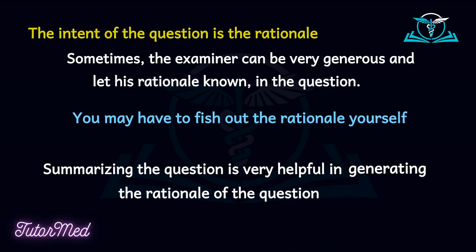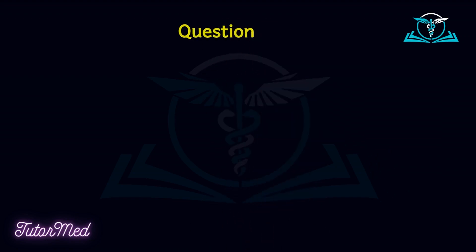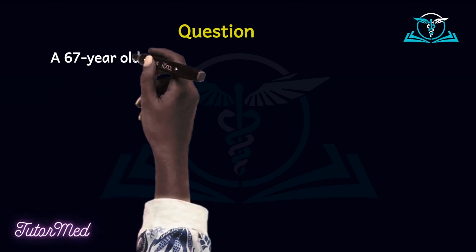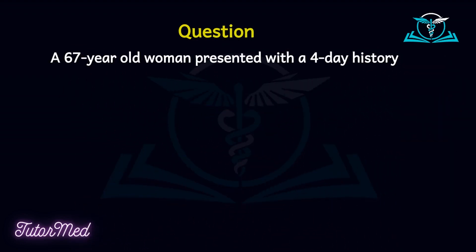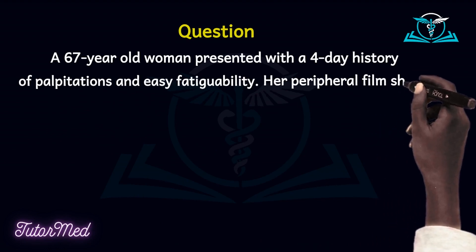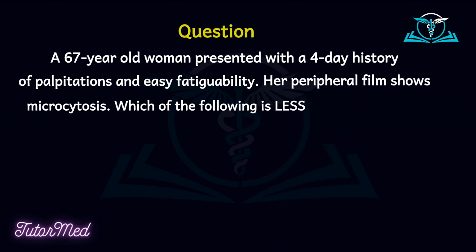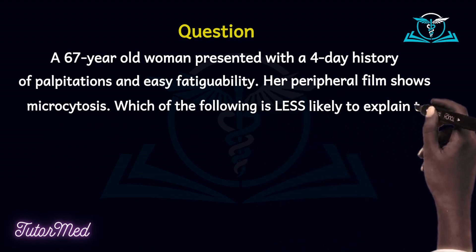In the following slide, we are going to use one question sample to actually illustrate these two concepts one needs to pay attention to when approaching MCQs. The question reads: a 67-year-old woman presented with a four-day history of palpitations and easy fatigability. Her peripheral film shows microcytosis. Which of the following is less likely to explain this finding?